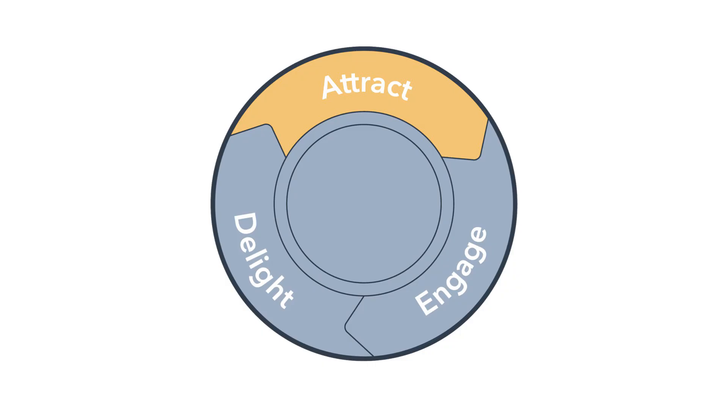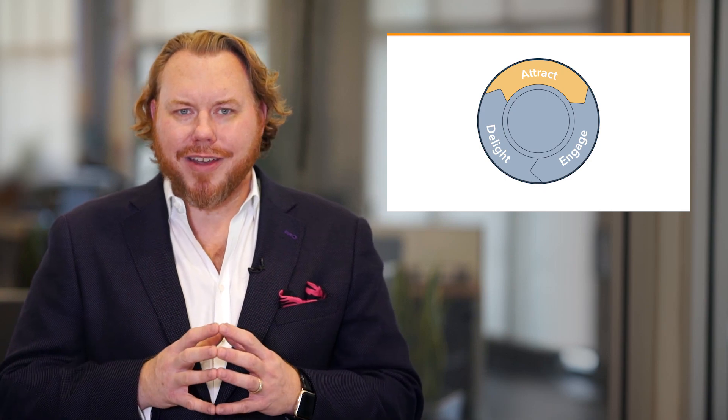Once you've clearly defined goals for your e-commerce business, your next step is to outline strategies to achieve them. Let's look at these using the inbound flywheel. The first stage of the flywheel is to attract. During this phase, brands generate product awareness with strategies like pay-per-click advertising, search engine optimization, content creation, and social media marketing.